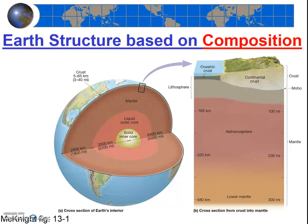First, we'll discuss the earth's layers based on composition. There are three layers, each made of a different material. The layers are called the crust, the mantle, and the core.